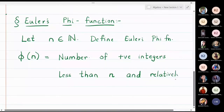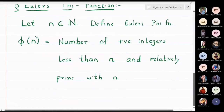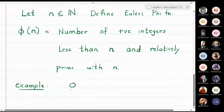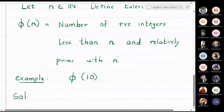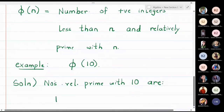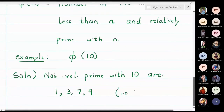Let me take one simple example. I want to find phi of 10. The numbers which are relatively prime with 10 are 1, 3, 7, and 9. These numbers are relatively prime with 10, meaning their GCD with 10 is equal to 1.